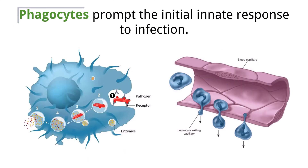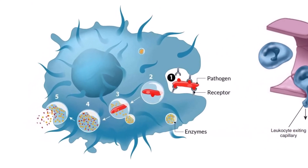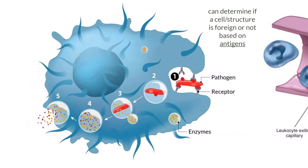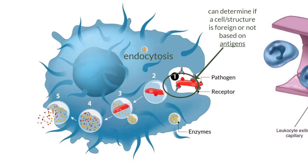Phagocytes are one type of specialized cell that works within the innate immune system. They have the ability to interpret whether a cell is an invader or not by the presence of specific antigens, which are specific structural components that extend from the cell membranes of just about everything — healthy cells, bacteria, viruses, tumors — and are used for communication. If the antigen is interpreted as something foreign, the phagocyte will engulf the pathogen via the process of endocytosis. This process involves having the pathogen enter the phagocyte by being wrapped up in a piece of the cell membrane. From there it can be chemically broken down by enzymes from lysosomes so it can no longer cause harm to any other cells.